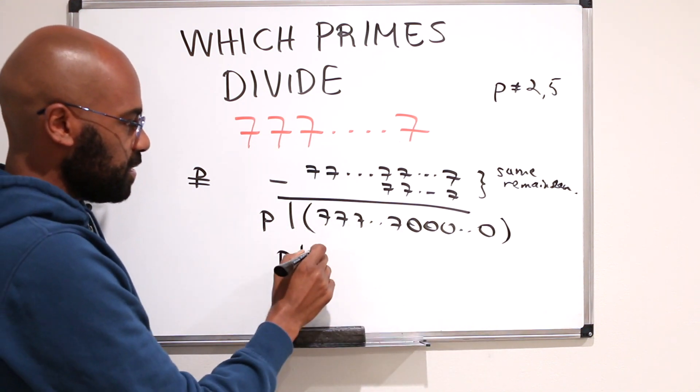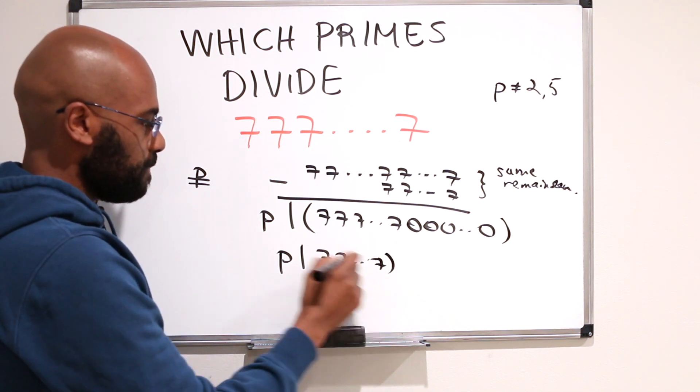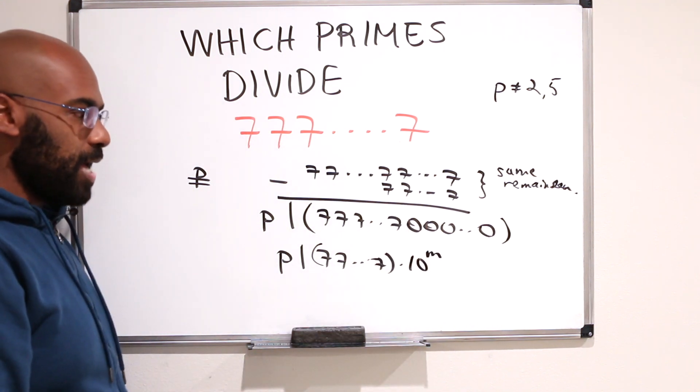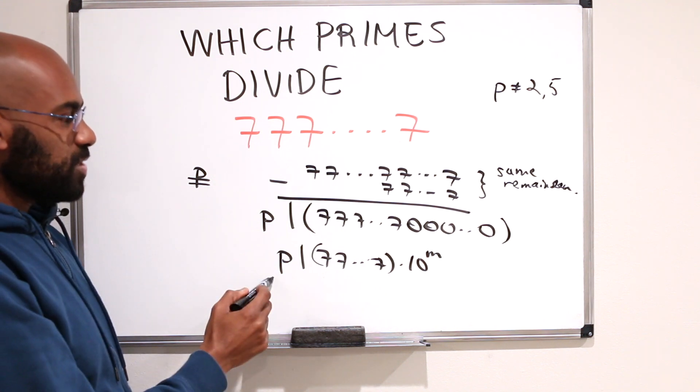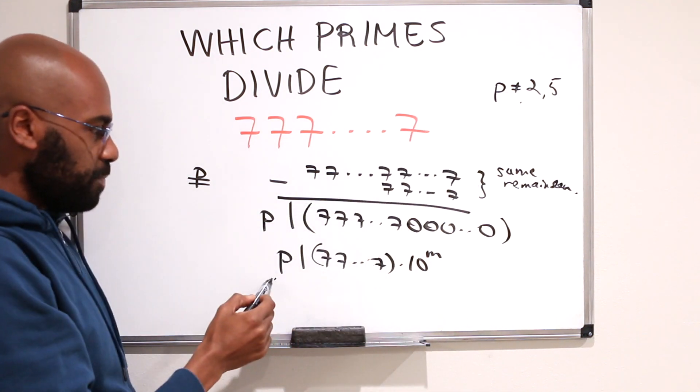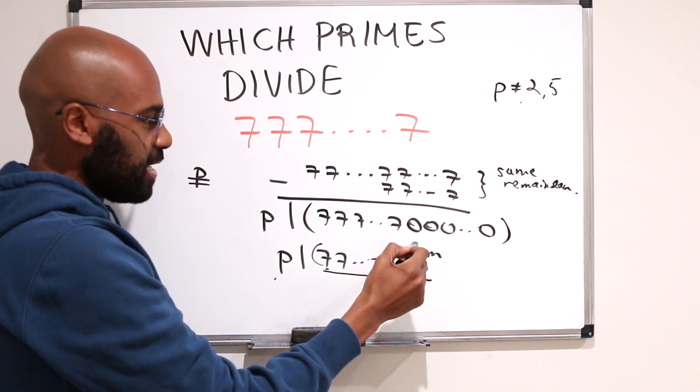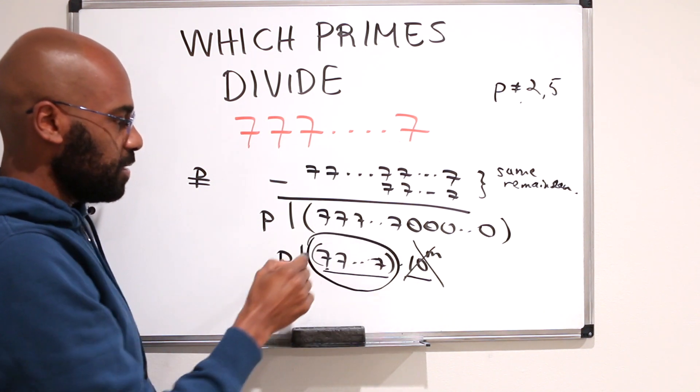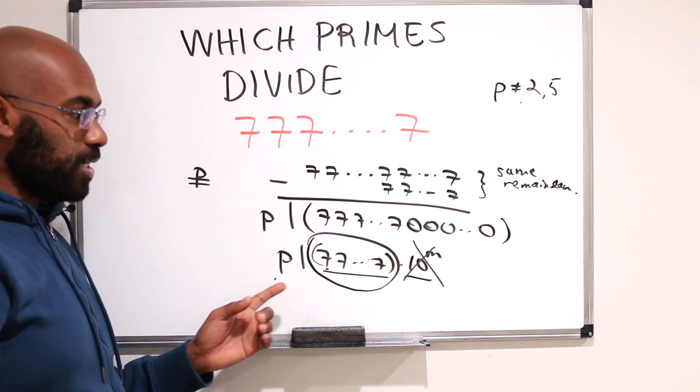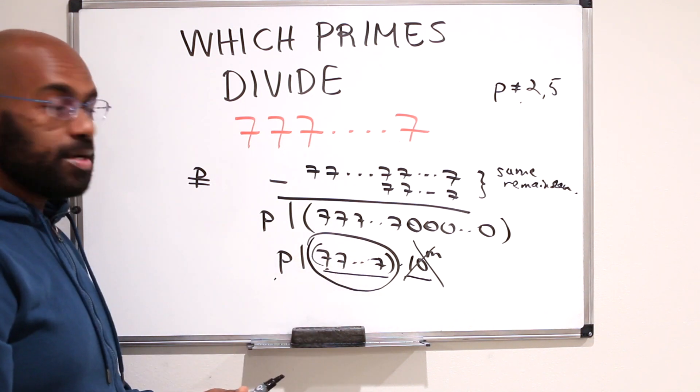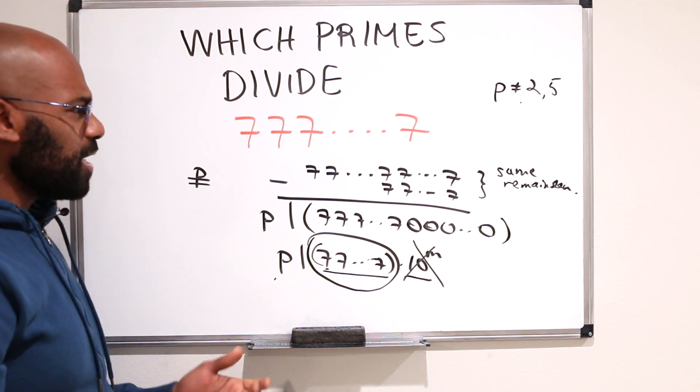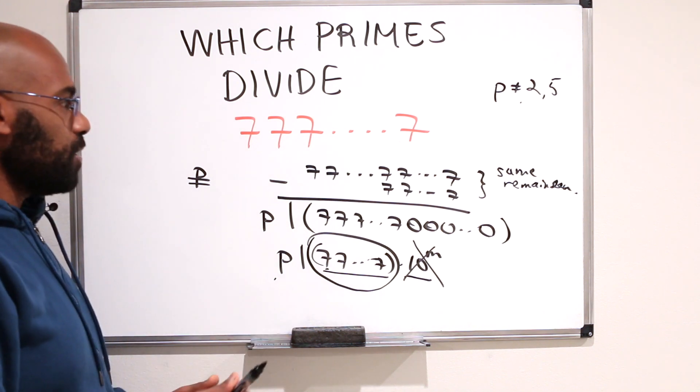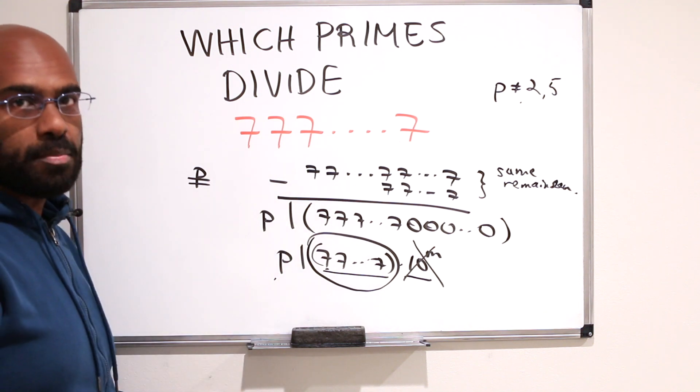However, this number is a number with a bunch of 7s in it times 10 to a power. We don't know what power, but we'll say 10 to the m because it ends in all these 0s. Now since we've selected p to be a prime that's not 2 or 5, p divides the product of two things. It can't divide this because it's not 2 or 5, so then it must divide this. So we obtain actually a contradiction that p actually does divide one of these numbers with a bunch of 7s in it.